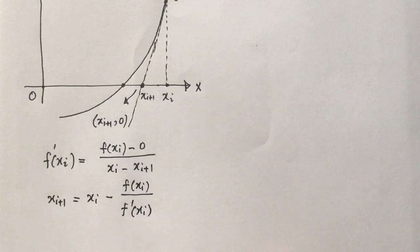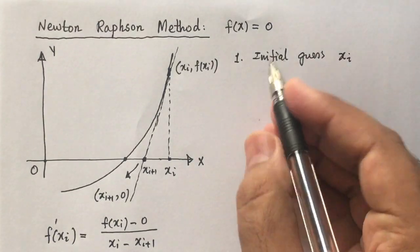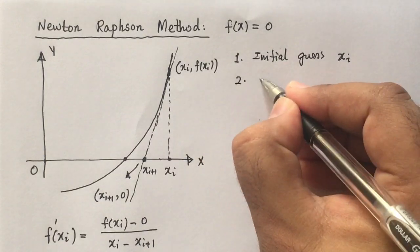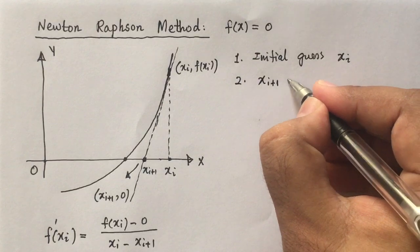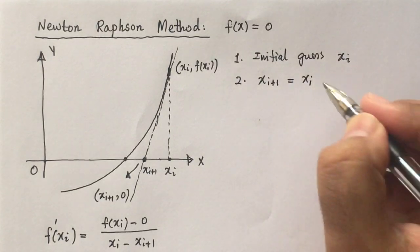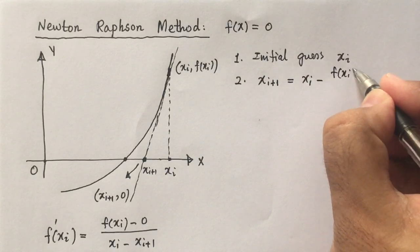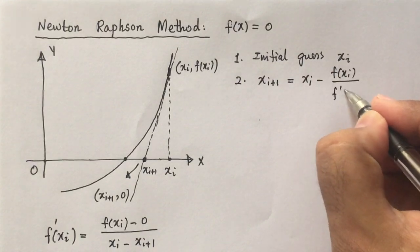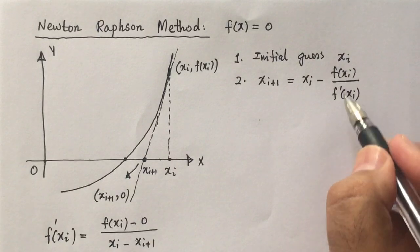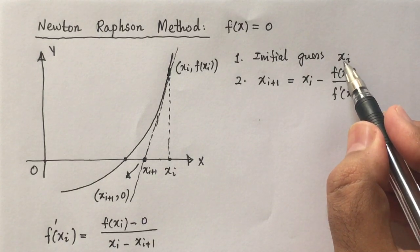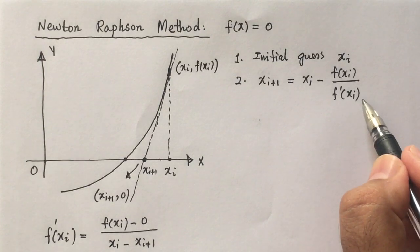This is the formula to calculate the approximate value using the Newton-Raphson method. The second step is to calculate xi+1 using the initial guess xi by the formula xi+1 = xi - f(xi) / f'(xi). Note that you must choose xi such that f'(xi) is not equal to 0.